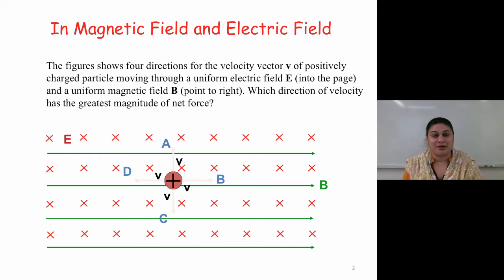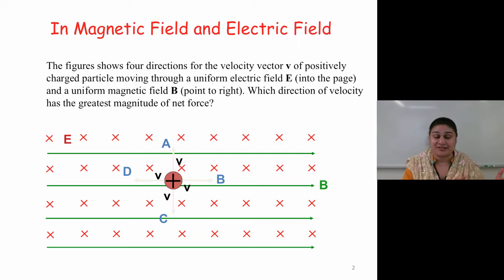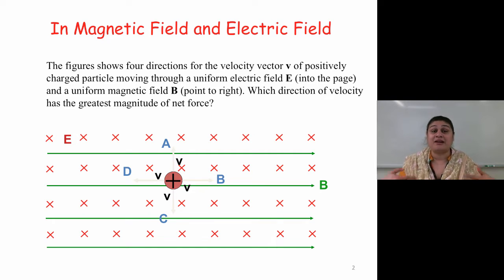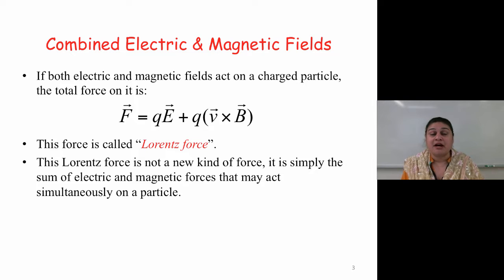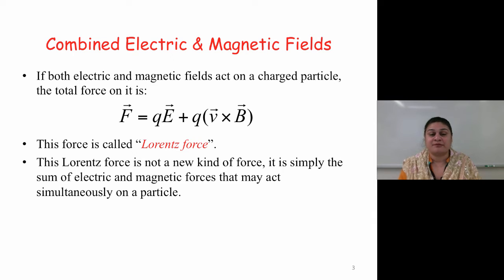This is a very complicated problem. In this case, we don't have just the electrical fields or just the magnetic fields that we have been dealing with so far. It needs another kind of force to be introduced, and that force is called the Lorentz force. When we talk about combined electrical and magnetic fields acting on a charged particle, the total force that acts on it is the sum of the electrical and magnetic forces, and that force is called the Lorentz force.